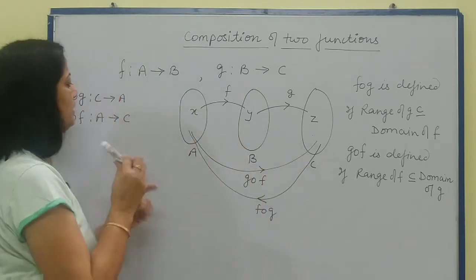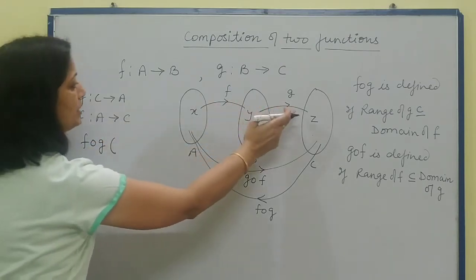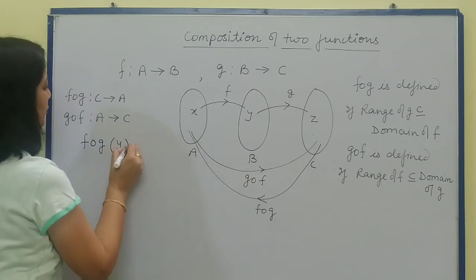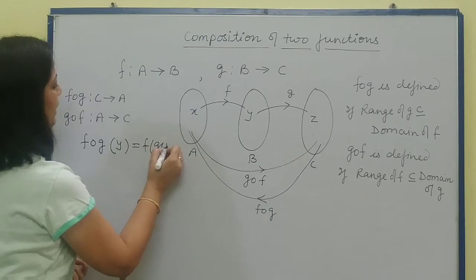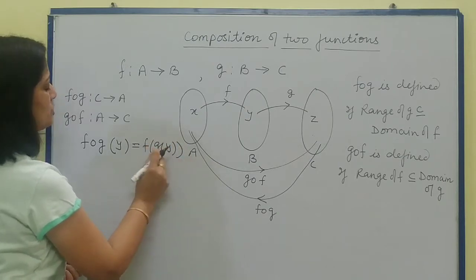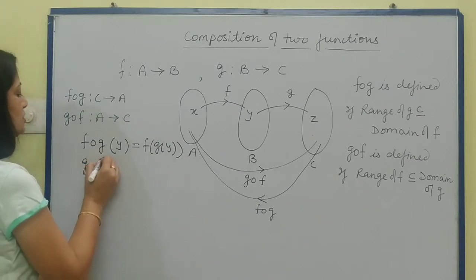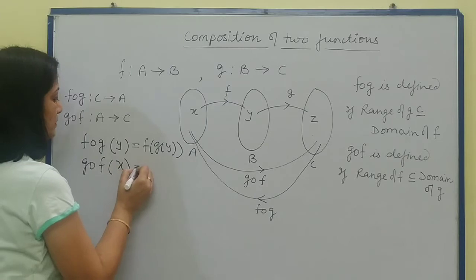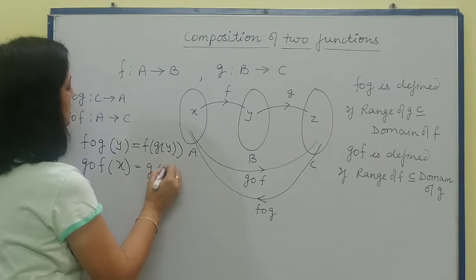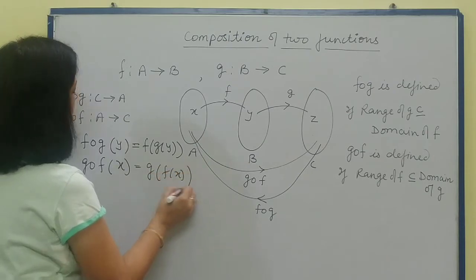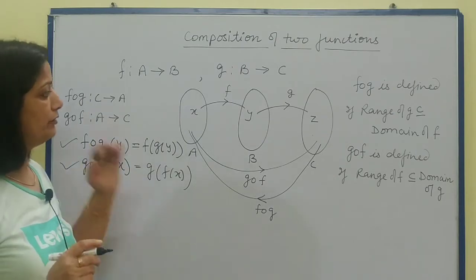What does this mean? In f composite g, which elements does g relate? You take y here, and we write it as f of g(y), which means first we put the value of g(y) and then apply f. If I need to find g composition f, but f relates x to y, so here we take g of f(x) for x. These are the two terms you need to remember, and that's it.